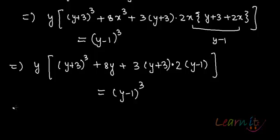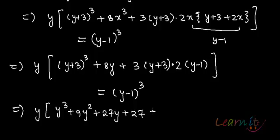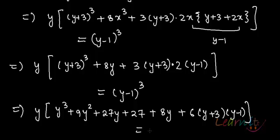So that means what I have? I have y into y cube plus 9y^2 + 27y + 27 plus 8y plus 6 into (y + 3) into (y - 1) equals to y cube.